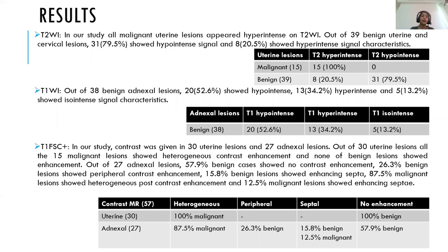On T2-weighted imaging, all malignant uterine lesions appeared hyperintense. Out of the 39 benign uterine and cervical lesions, 31 showed hypointense signal and 8 showed hyperintense signal characteristics. Out of the 38 benign adnexal lesions, 20 (52.6%) showed hypointense signal on T1-weighted imaging, 13 cases (34.2%) showed hyperintense signal, whereas 5 cases showed isointense signal characteristics.